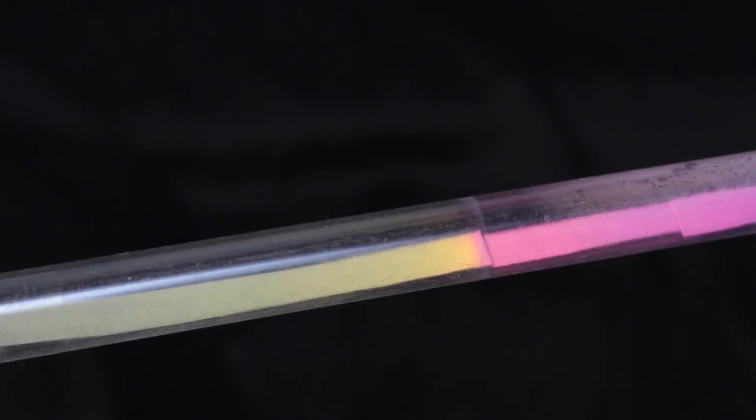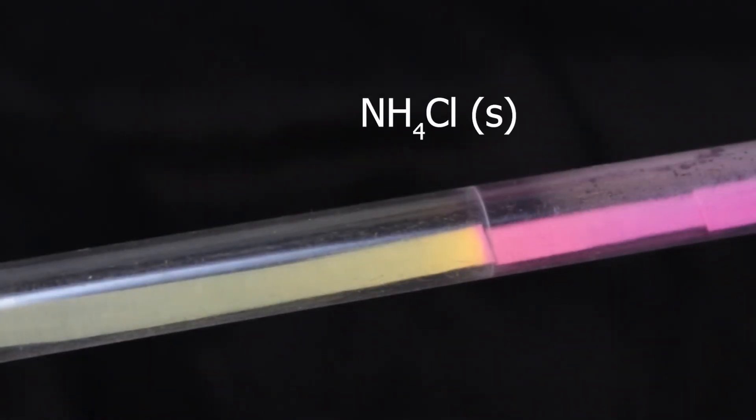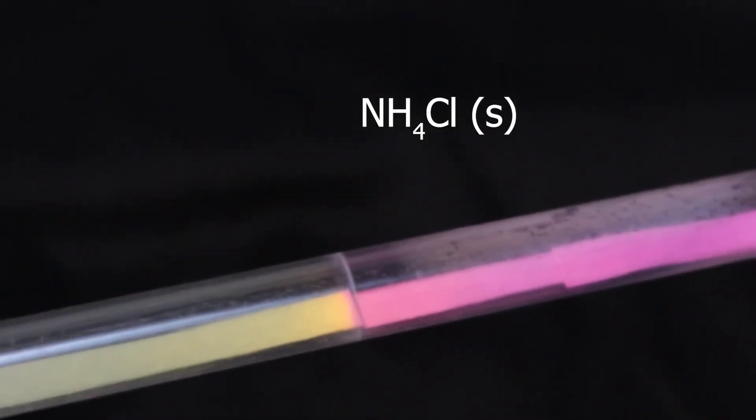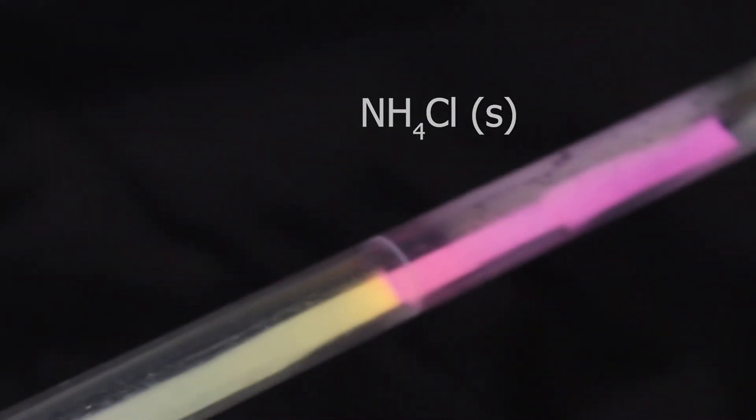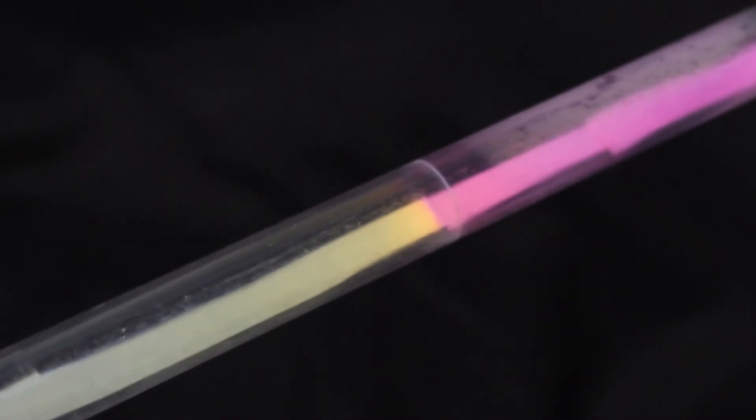You see the formation of white substance at the point where the gases met. This is the same solid, ammonium chloride, which forms, which looks like a white ring.